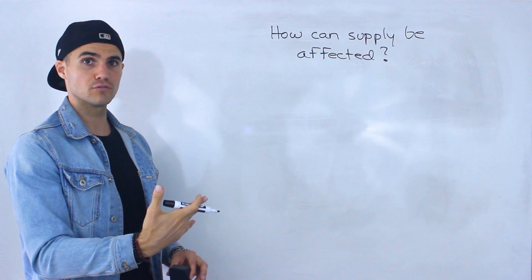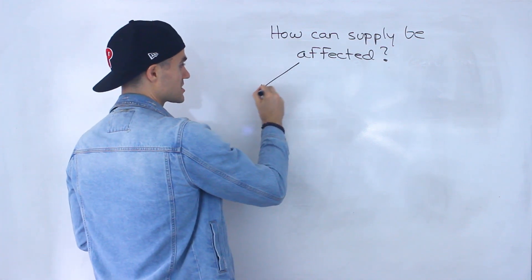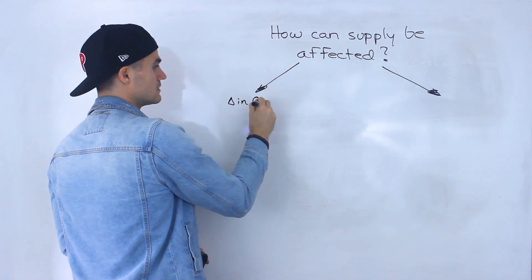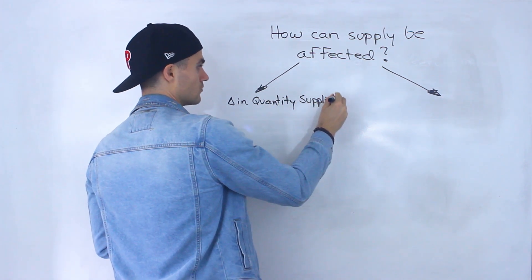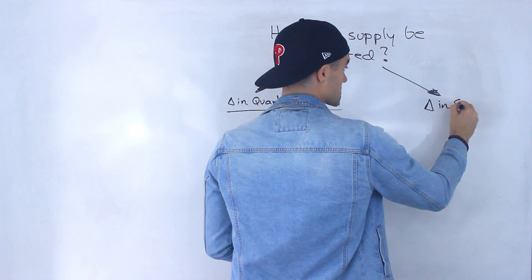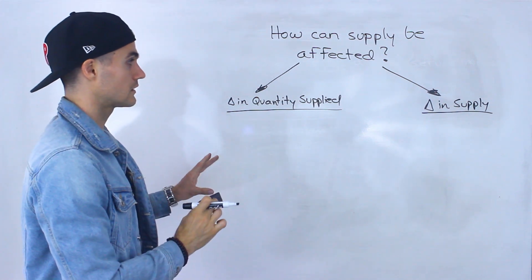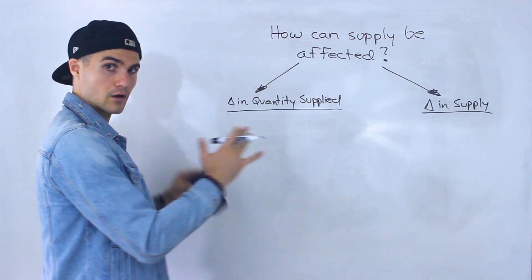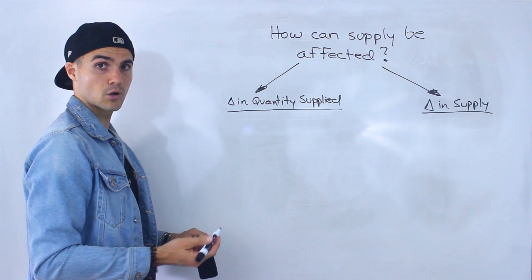In the next couple of videos, we're going to cover how supply can be affected. We split this into two cases, just like we did with demand: there's a change in quantity supplied, and there's a change in supply. Both are different and will be separate videos. The wording is almost similar, but they are different — so be careful when reading your textbook, listening to your professor, or when you see it on the midterm or exam.